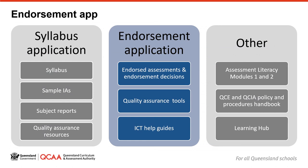The endorsement application is another valuable source of information. Retained in this application is a record of all previous endorsed and comparable assessment instruments for your school. This also includes the directives for assessment instrument versions that were not endorsed, so that you can reflect on that advice before you begin to develop new assessment. Located in the endorsement app are the quality assurance tools, also used by endorsers to guide decisions about your submitted assessment instruments. There are a range of ICT resources that can be accessed by clicking on the help link when you are working in the endorsement application.